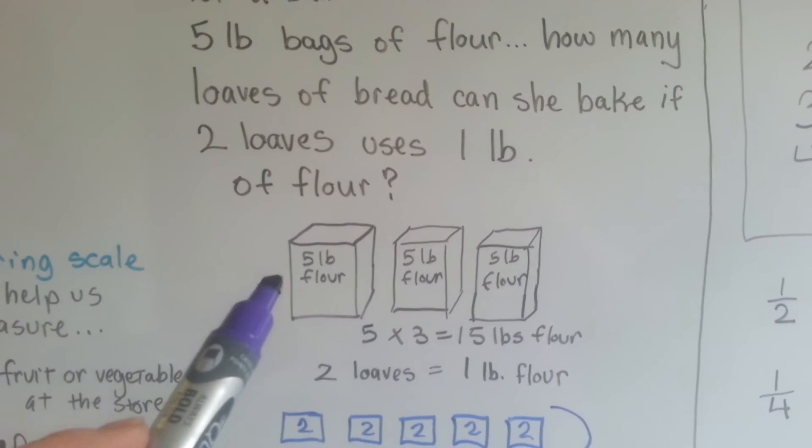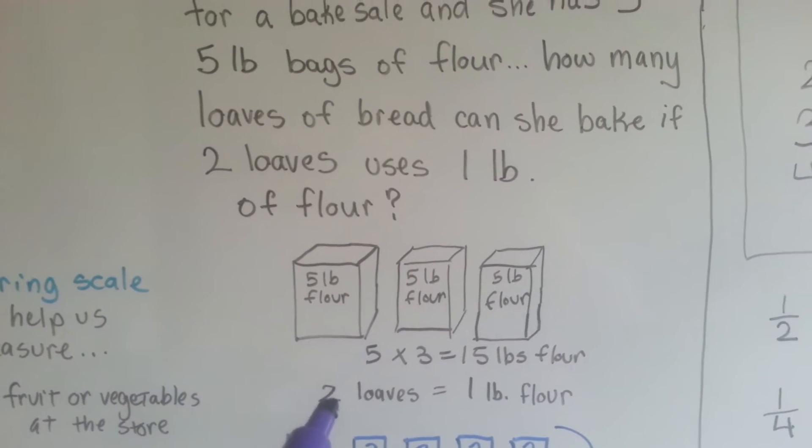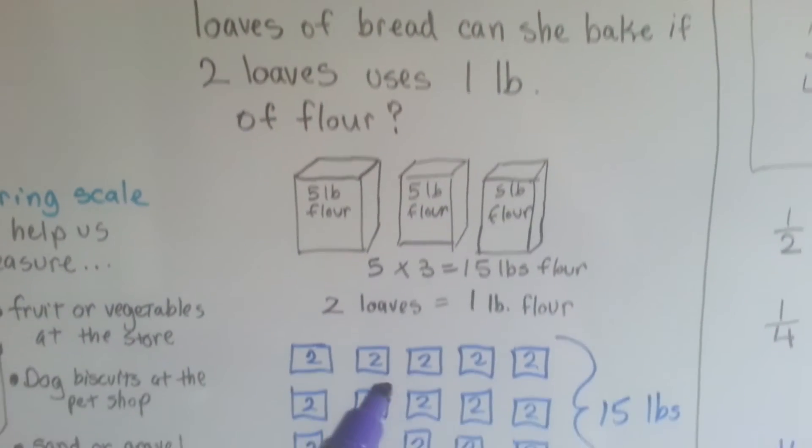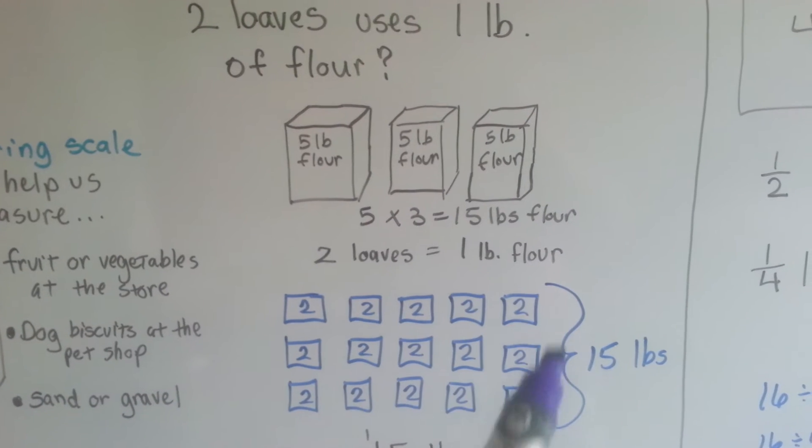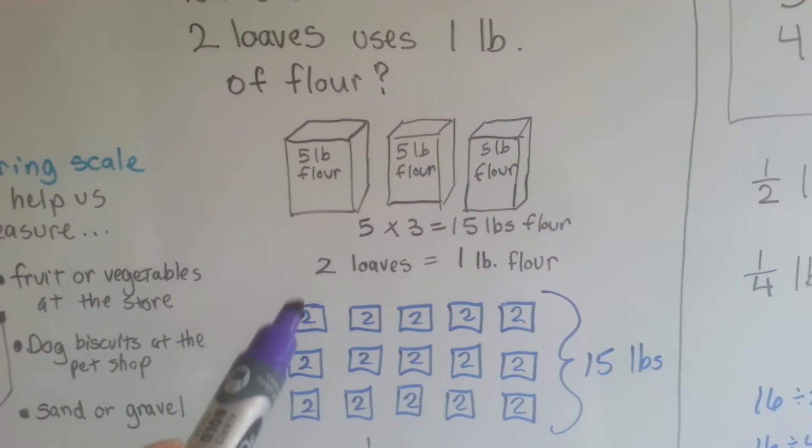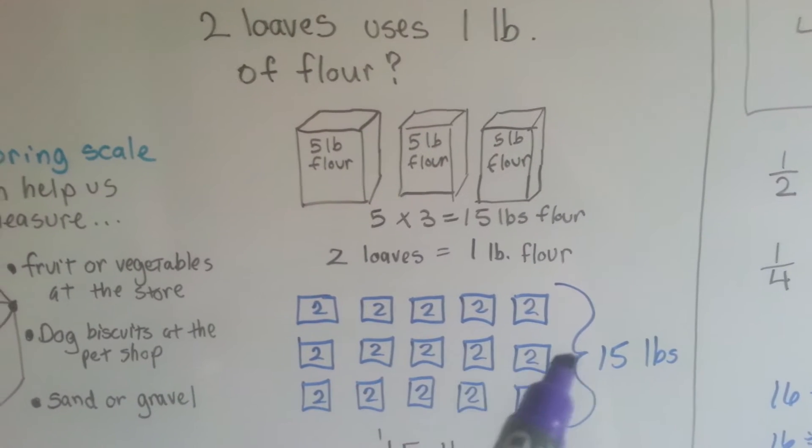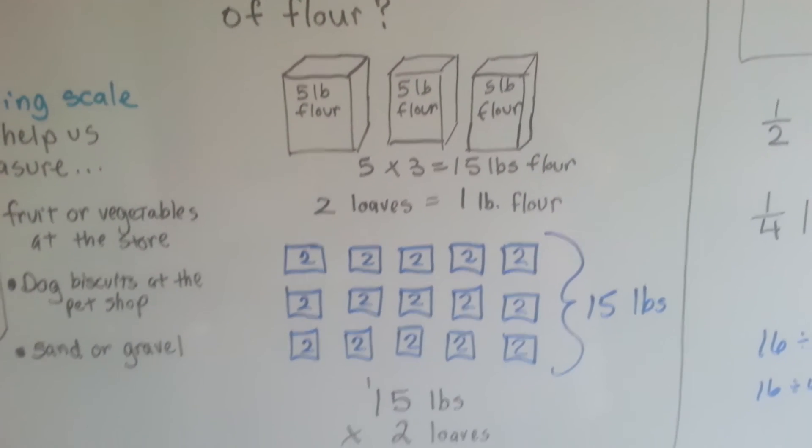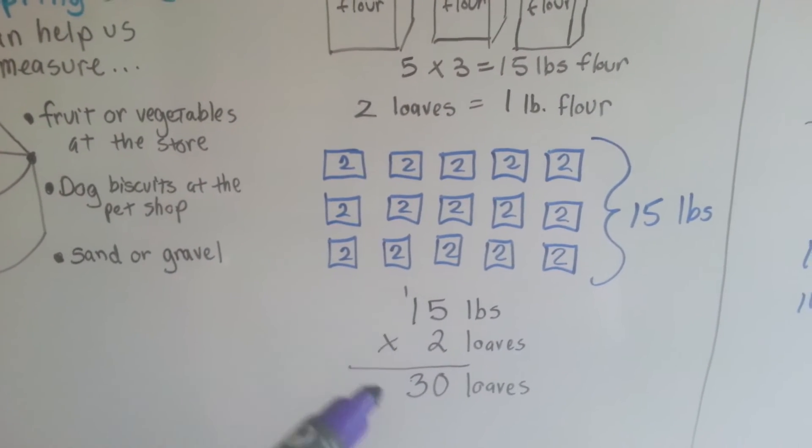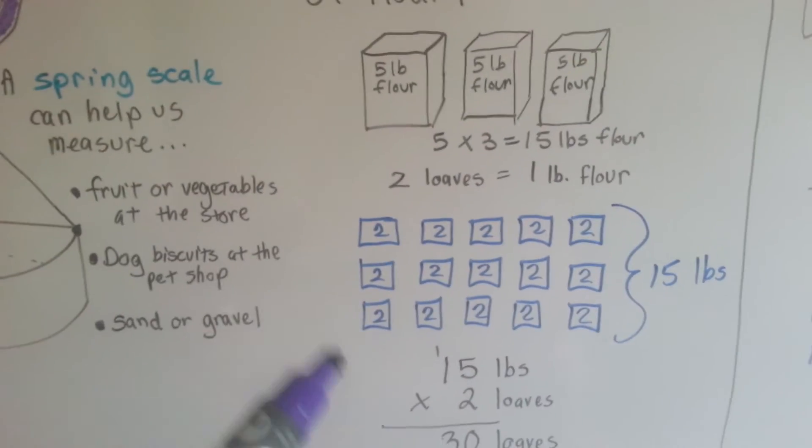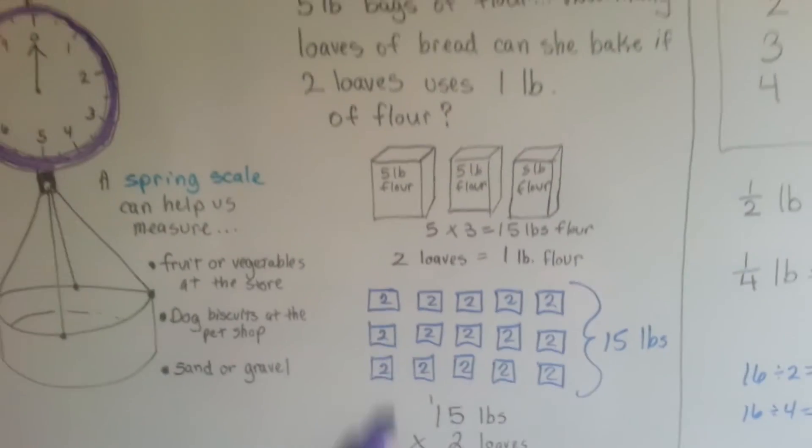If each pound is two loaves of bread, we need to multiply fifteen times two. Fifteen times two is thirty. She can make thirty loaves of bread with her fifteen pounds of flour.